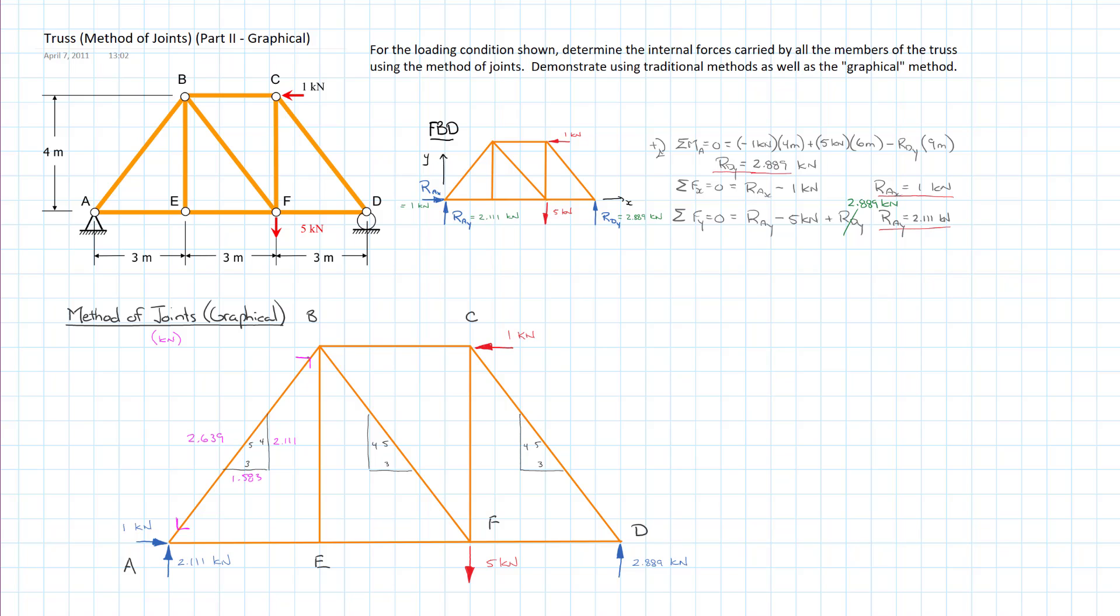To finish that off, because that is down and left, it has to be equal and opposite at the other side so I'm going to put my arrowhead in there. Let's finish off the joint. We have to look at member AE. We have 1 kilonewton to the right from the reaction. We have 1.583, the horizontal component pushing left from AB, so we know that we have to be pulling to the right.